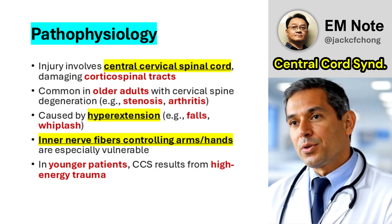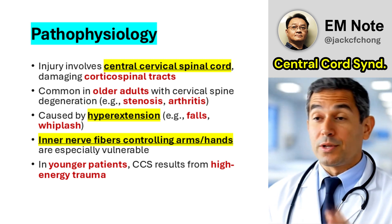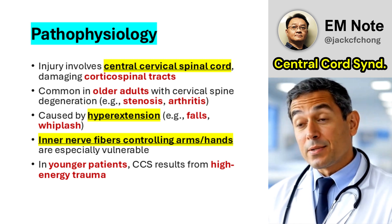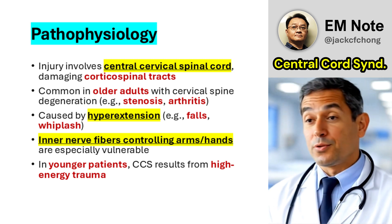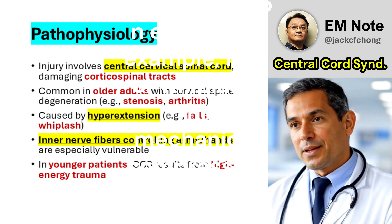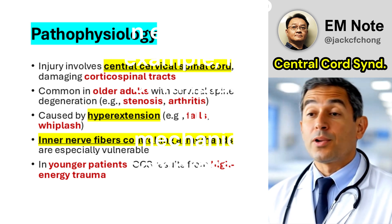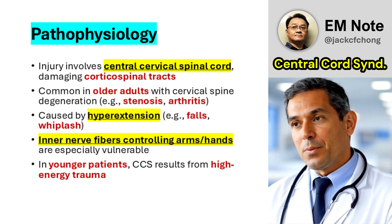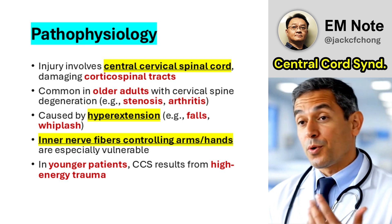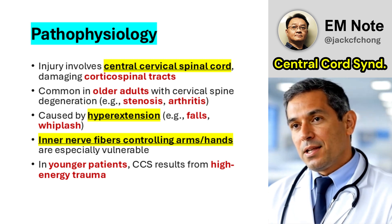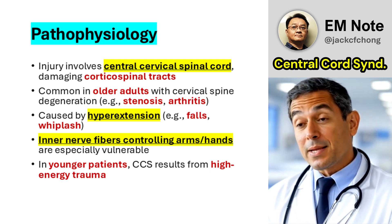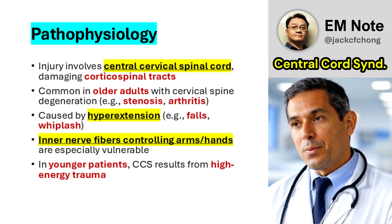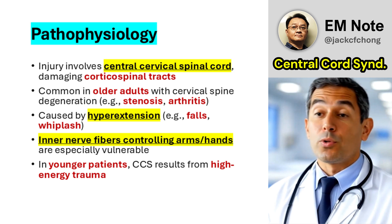Central cord syndrome primarily results from compression of the central cervical spinal cord, damaging the corticospinal tracts responsible for upper limb motor function. In older adults, degenerative cervical spine changes such as spinal stenosis or arthritis predispose individuals to injury during hyperextension events — for example, falls or whiplash. This mechanical compression exacerbates pressure on the spinal cord, particularly affecting the inner nerve fibers that control arm and hand movements.